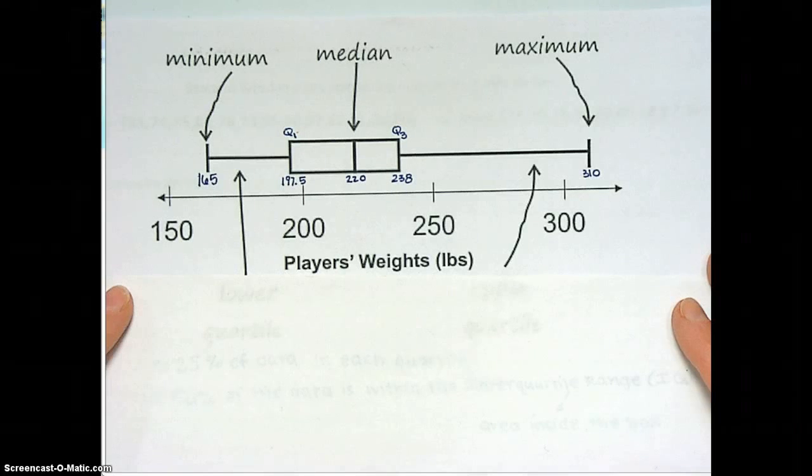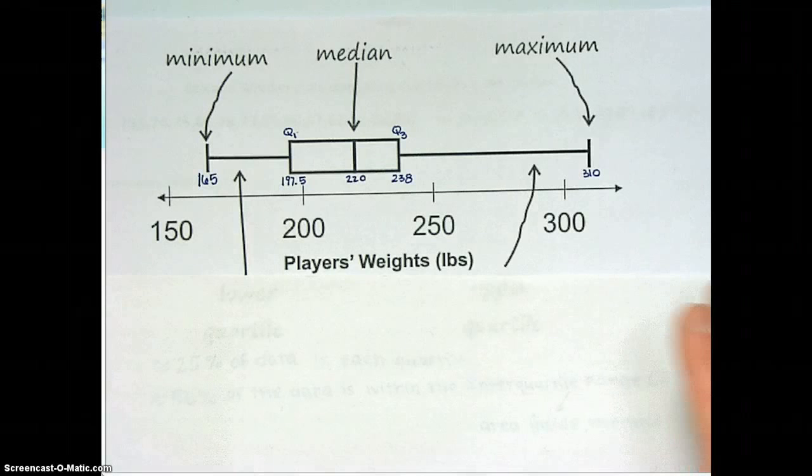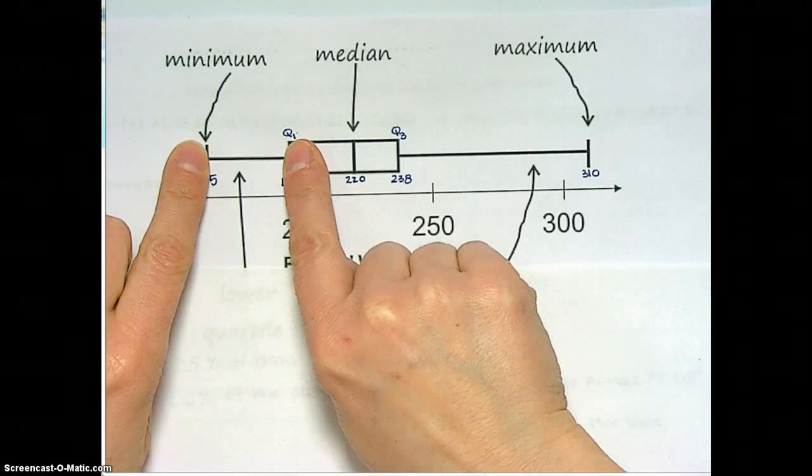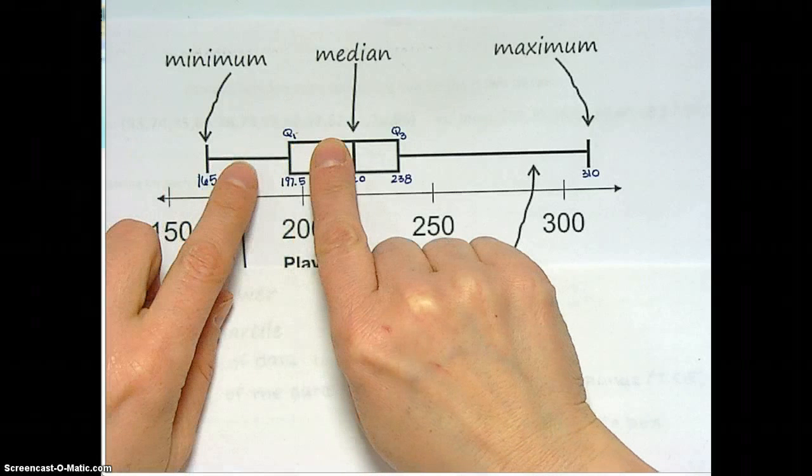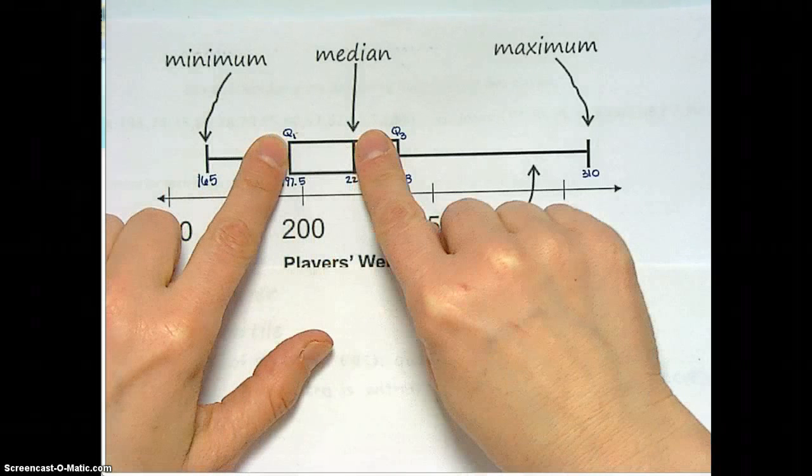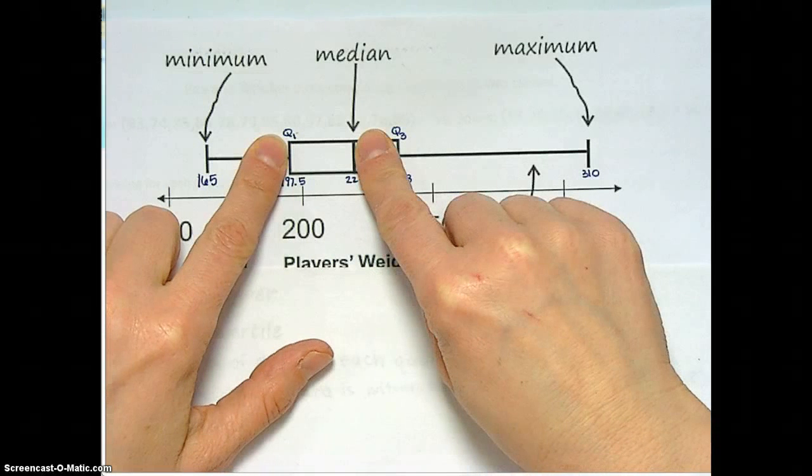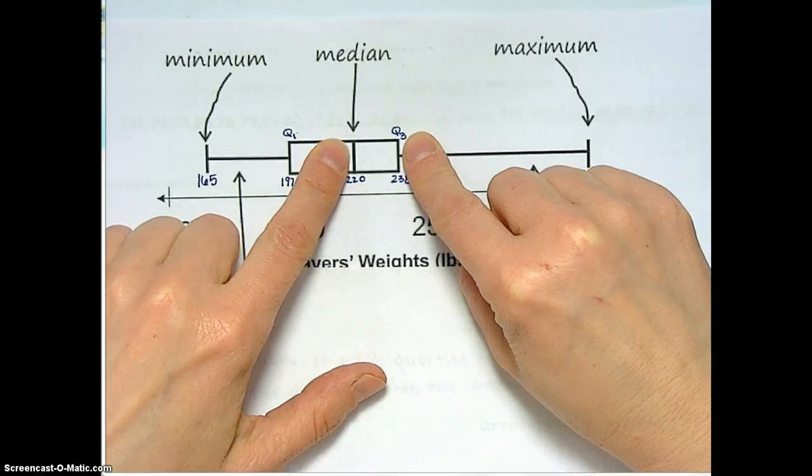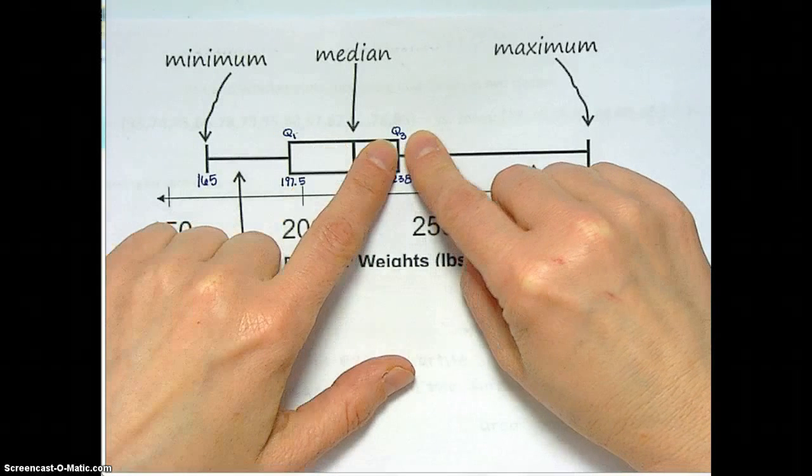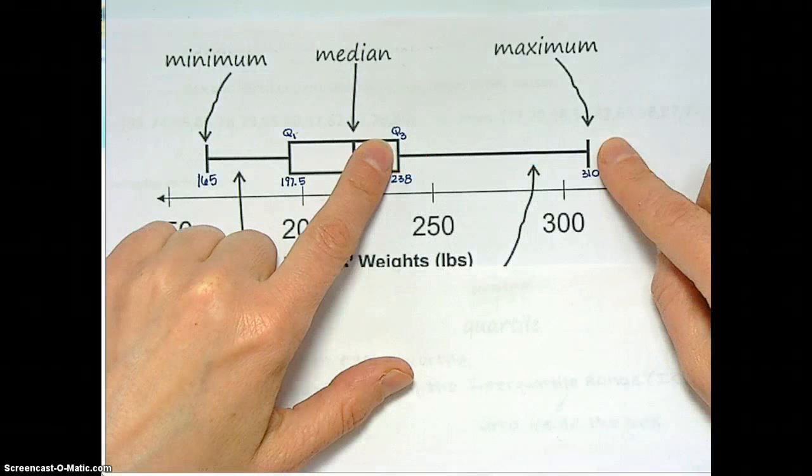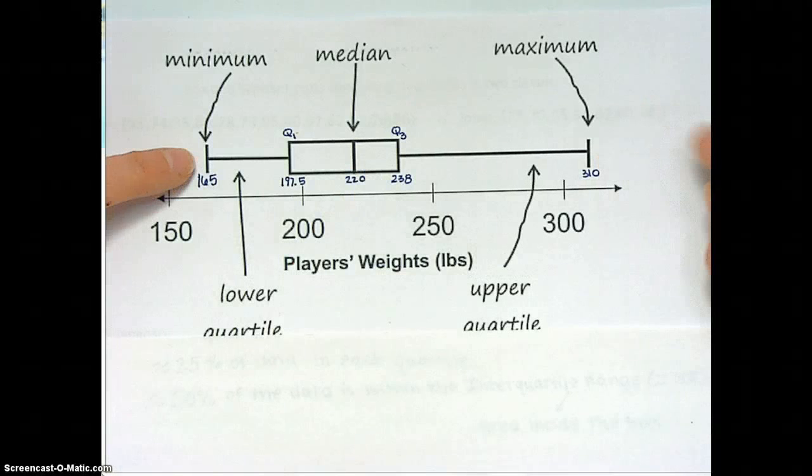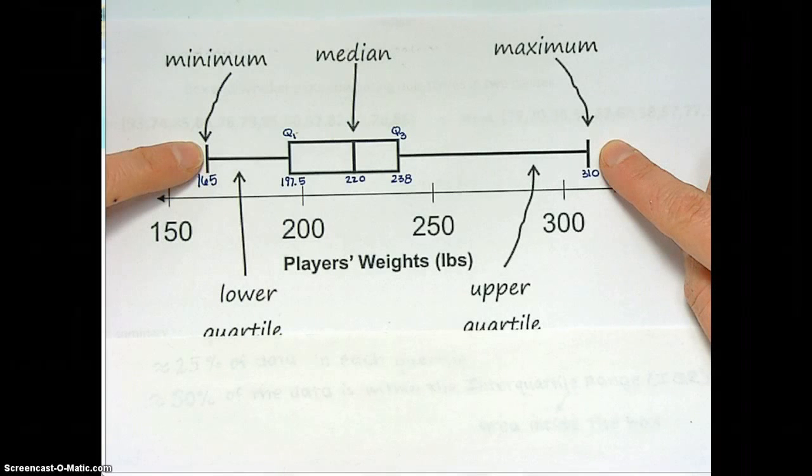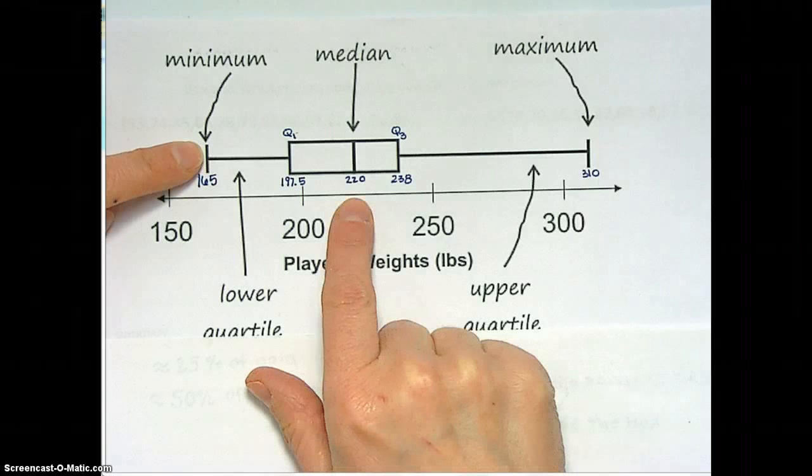And what it is, is with a box and whisker plot, each quarter of the data has its own little piece. Here's the first quartile right there, between 165 and 197.5 is a quarter of the people. Between 197.5 and 220 pounds is a quarter of the people. Between 220 pounds and 238 pounds is a quarter of the people. And between 238 and 310 pounds is a quarter of the people.